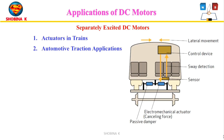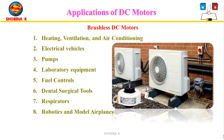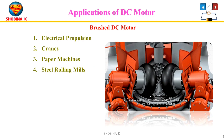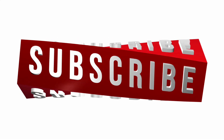The separately excited DC motor is often used as actuators in trains and automotive traction applications. The brushless DC motor is used in electrical vehicles, pumps, laboratory equipment, fuel controls, and many more. The brushed DC motor is often used in cranes, paper machines, steel rolling mills, and so on. With this we have come to the end of the session. Thank you so much for watching.